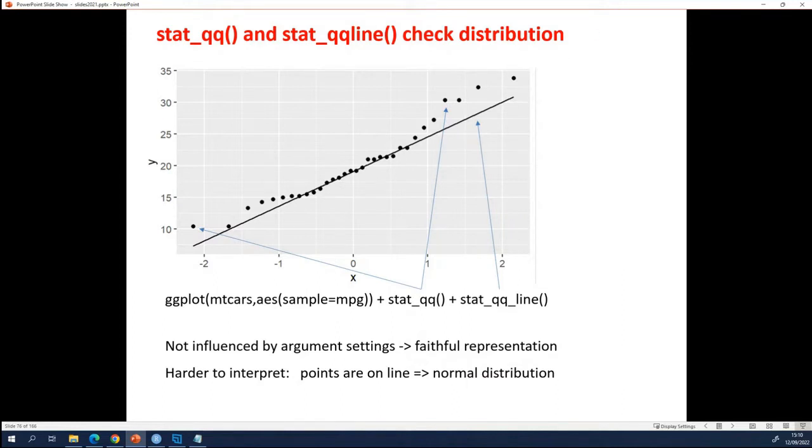When is your data normally distributed? When it follows this black line. Here in the middle, your points follow the black line. But what about this part and this part?